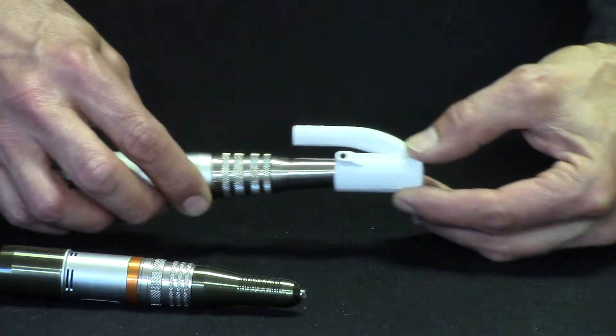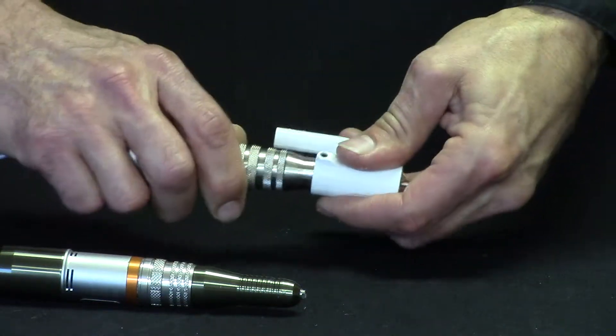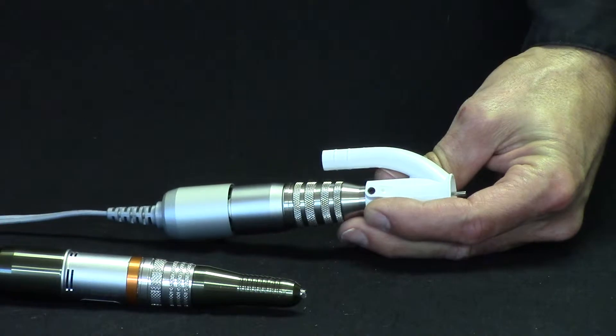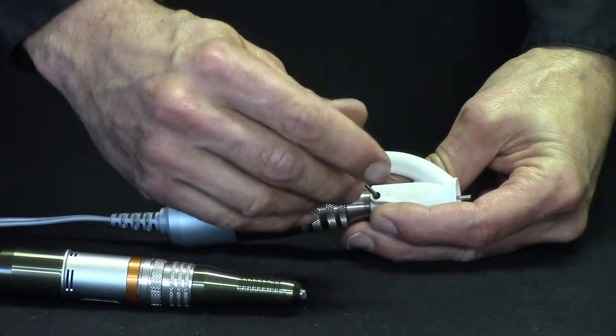So to install the sheath onto the super, you're just going to slide the handpiece on, tighten the sheath down with your supplied Allen wrench.